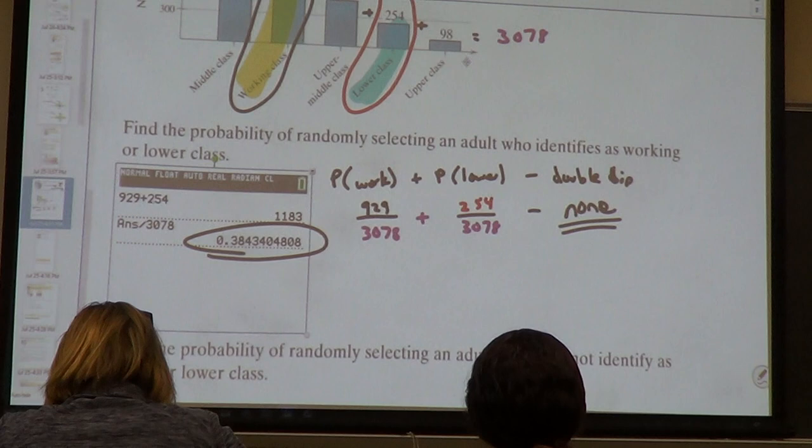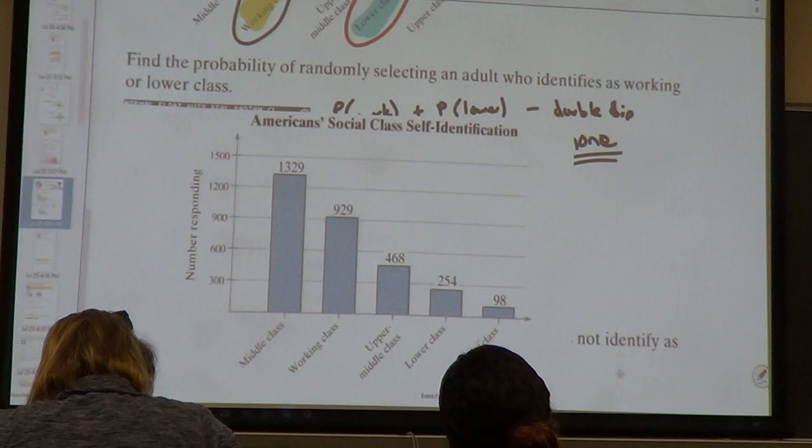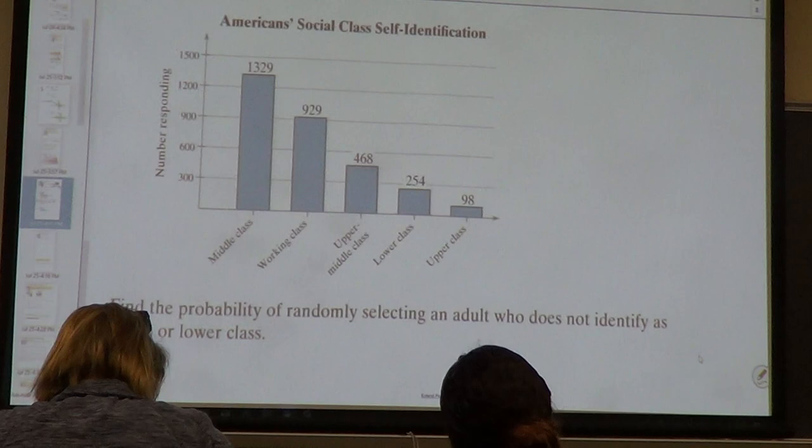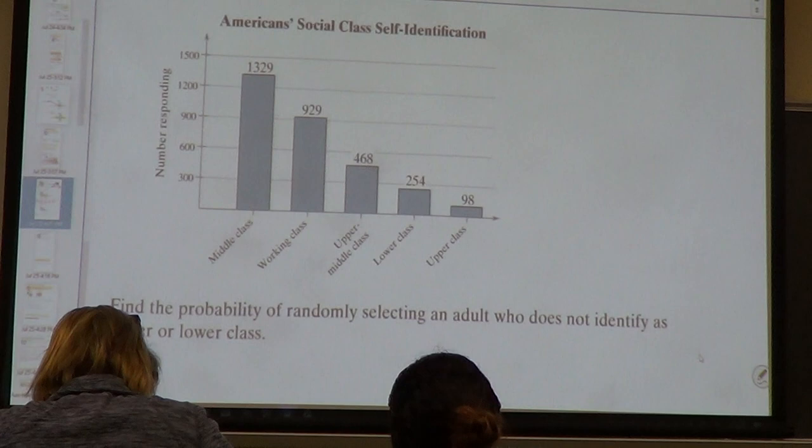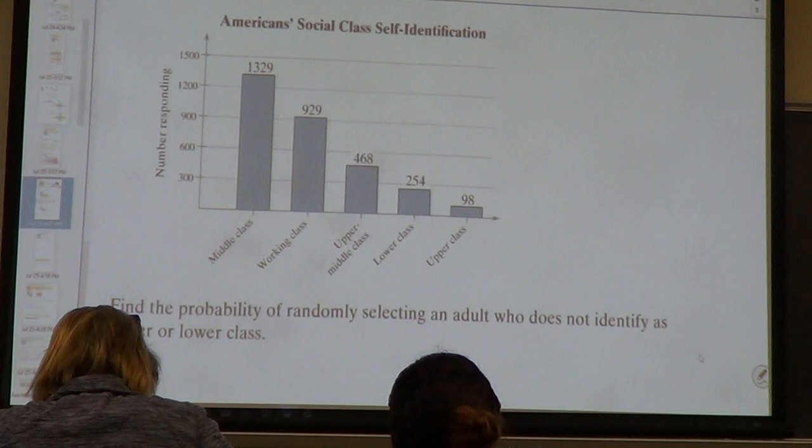Let's do another one of those. This is a 'not' problem — and this is how they'll appear on the test, all mixed up. Decimal to three places. Not identify as upper or lower class.